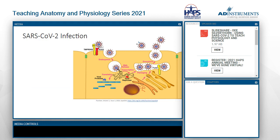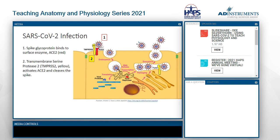This is a figure from a journal published by the American Physiological Society called Function, from an article about COVID and the epithelial sodium channel ENaC. The process shown is more complex: the spike glycoprotein binds to the surface enzyme ACE2. Then a transmembrane serine protease cleaves part of the spike protein, which activates endocytosis of the virus particle. The endosome brings it into the cell, and you can see the same steps for replication and release. I use this figure with students and start asking them questions about what ACE2 is and how it differs from ACE.